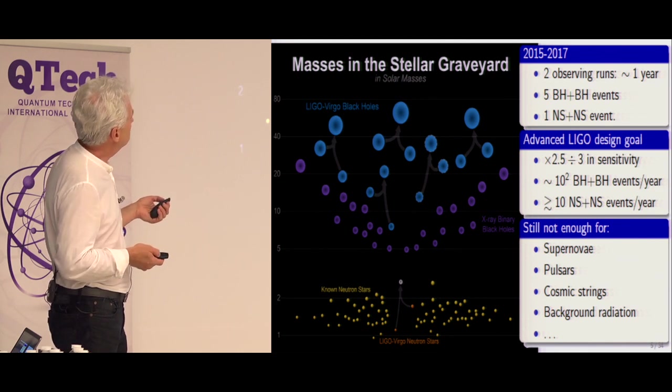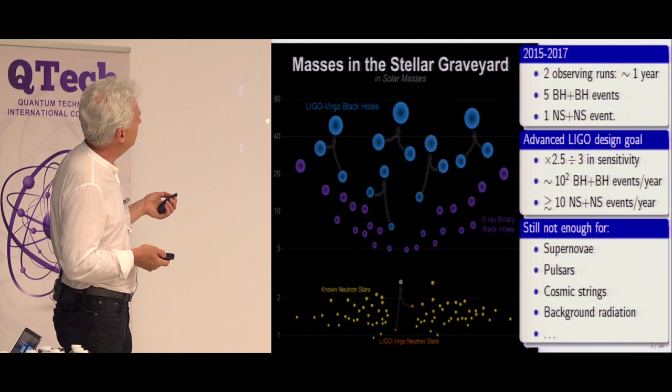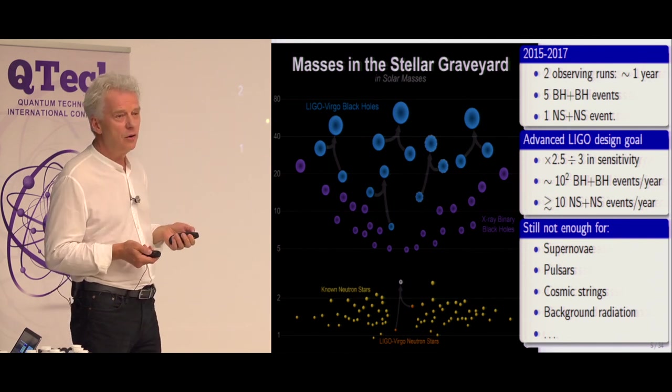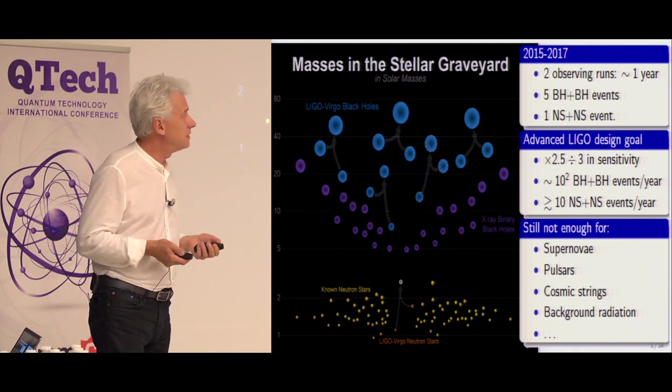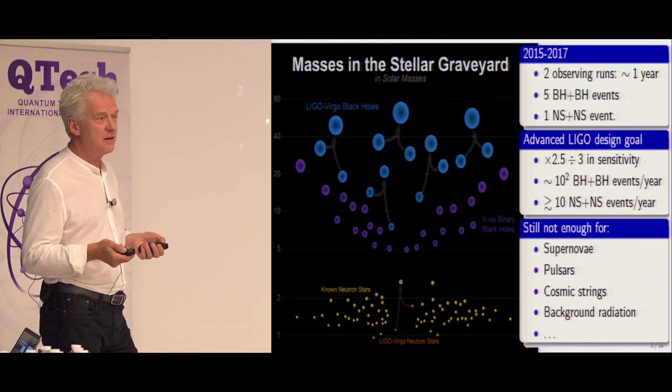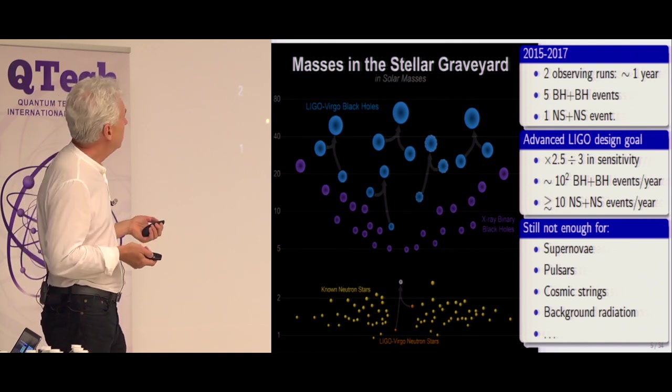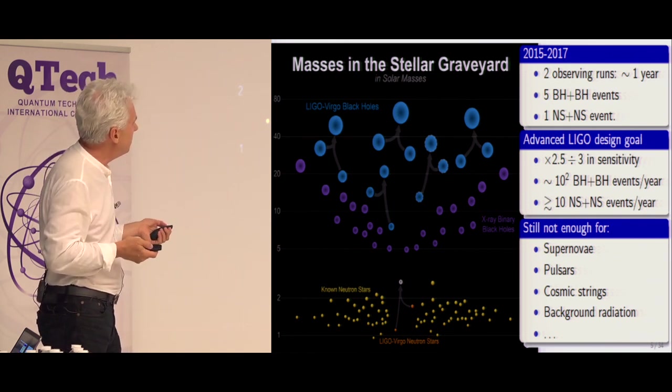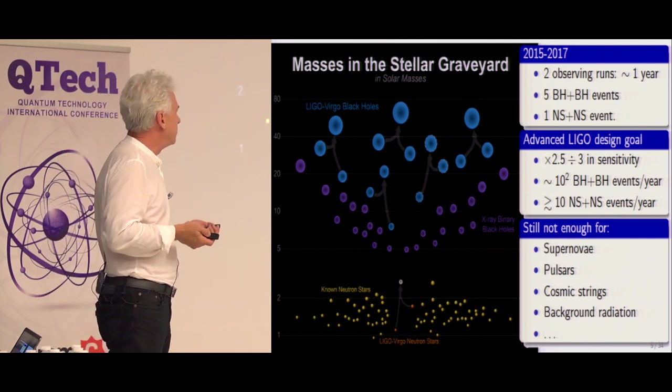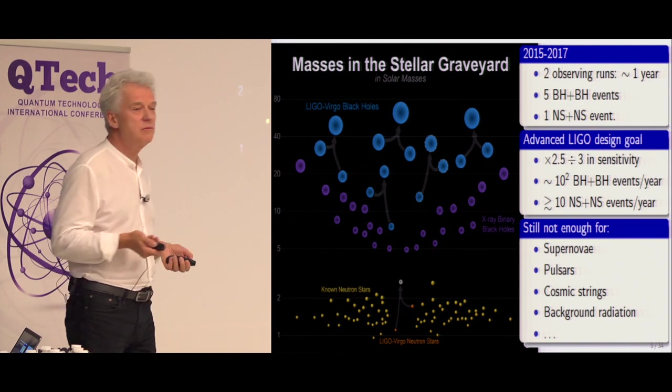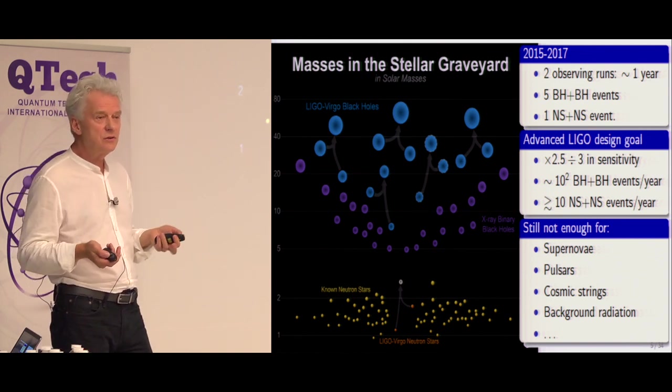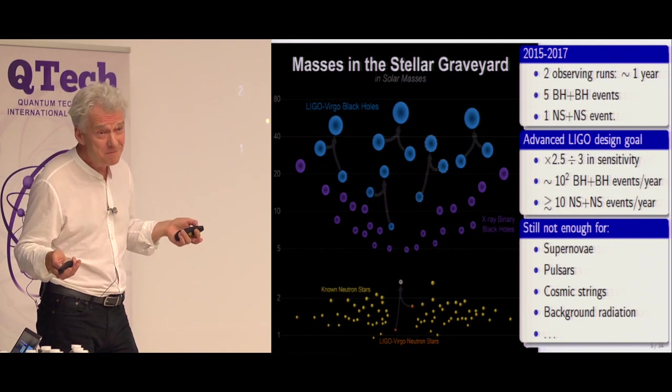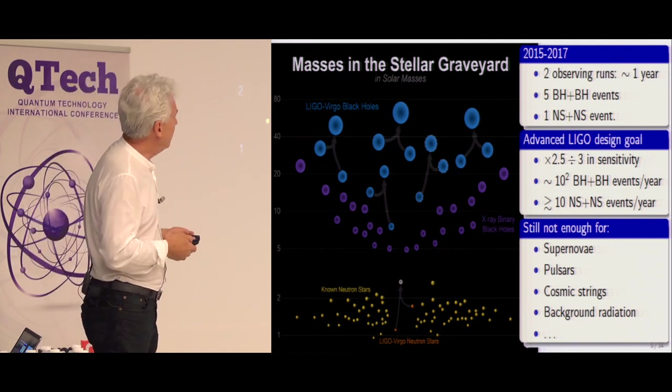So you look at the time when the LIGO first ran from 2015 to 2017. So they observed five black hole merger events and one neutron star event. In the advanced LIGO design, which hopefully will be launched next year, they hope to improve the sensitivity by a factor of 2 to 3. And that would improve the number of events significantly. And still it's not enough because it's never enough and you need to have better and better sensitivity. And every factor of 2 in sensitivity increases the volume of the universe by a factor of 8. So that's a wonderful, really wonderful game.